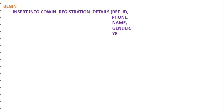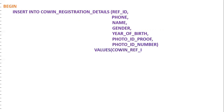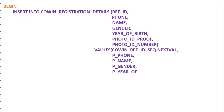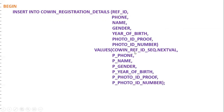We write the INSERT statement to capture these results, inserting into: reference_id, phone number, name, gender, year of birth, photo ID proof, and photo ID number. For reference_id, we use covin_ref_id_sequence.NEXTVAL to access the next sequence number. The remaining values — p_phone, p_name, p_gender, p_year_of_birth, p_photo_id_proof, p_photo_id_number — are input parameters from the user. To commit the transaction and store data permanently in the database, we use COMMIT.